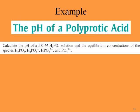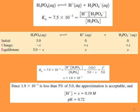Let's calculate the pH of a 5 mol/L phosphoric acid solution and the equilibrium concentrations of its ions. Writing the first dissociation equation, KA1 = 7.5 × 10⁻³. Setting up the ICE table: initial concentration is 5, change is −x for H₃PO₄ and +x for products. So 7.5 × 10⁻³ = x² / (5 − x). Neglecting −x gives x² = 5 × 7.5 × 10⁻³, so x = 1.9 × 10⁻¹.